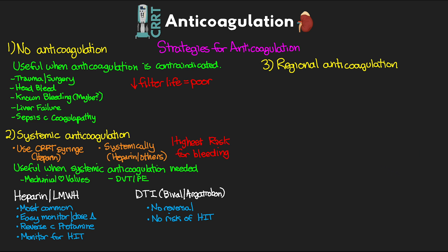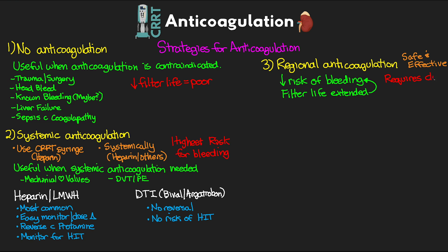Regional anticoagulation is probably the most common strategy you're going to come across, and there are several studies showing it is safe and effective. With this strategy there is less risk for bleeding, and we can use it in some patients who have known bleeding or bleeding risk factors. Ultimately our filter life is going to be extended with a lower risk, though this strategy requires closer monitoring of our patients.